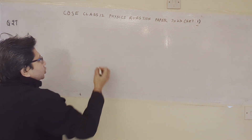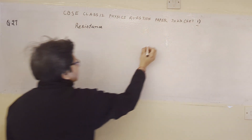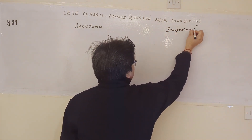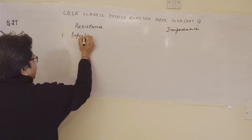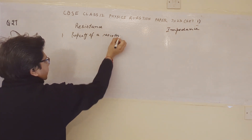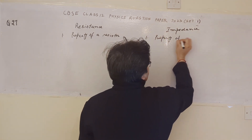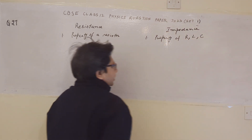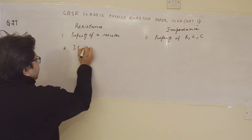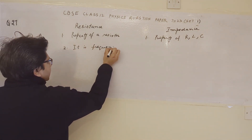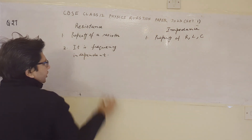Here is the difference between resistance and impedance. Resistance is generally the property of a resistor, whereas impedance is the property of R, L, and C — that is, resistor, inductor, and capacitor. Resistance is frequency independent.